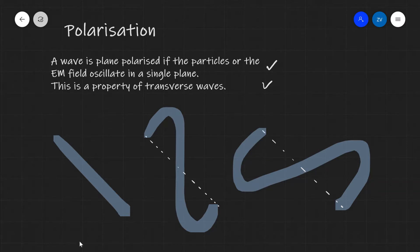For instance, you could have a piece of string. That piece of string could be oscillated in multiple different directions. For instance, we could choose to oscillate this in the vertical plane, like so.